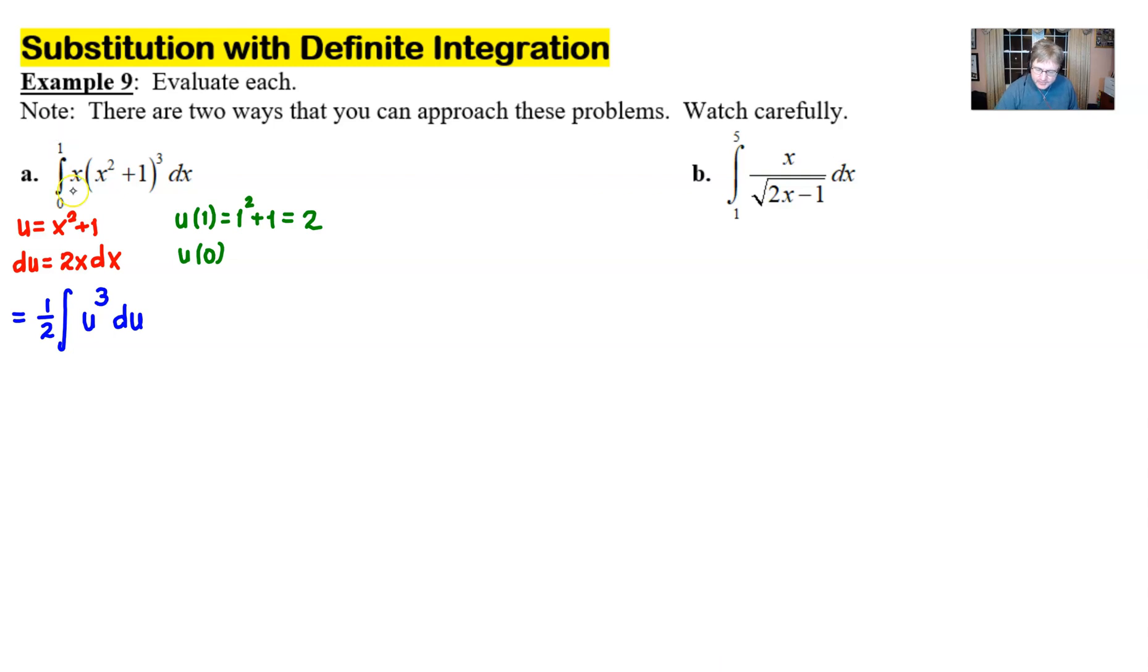In other words the boundary of 1 is actually going to take the place or be replaced by 2 and our boundary of 0 if I plug that in and take 0 squared plus 1 I get a boundary of 1 and this will fulfill a new integral. It will have the same value as our previous.